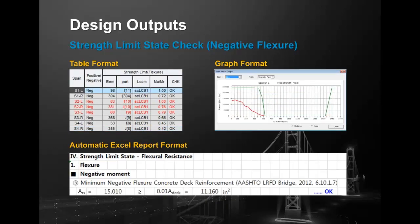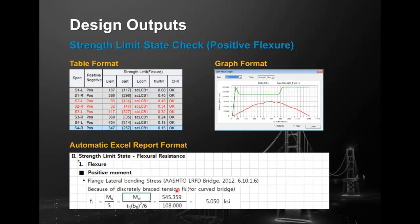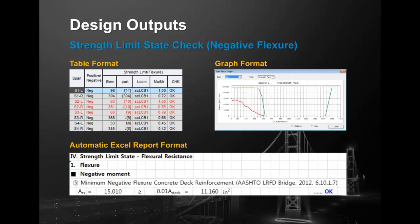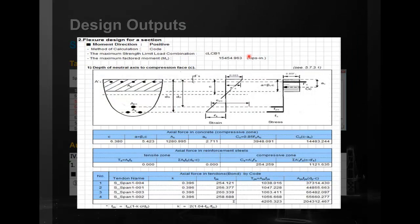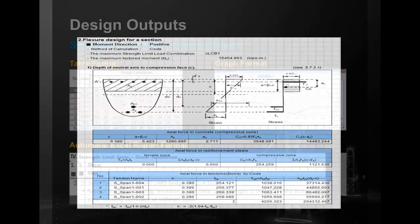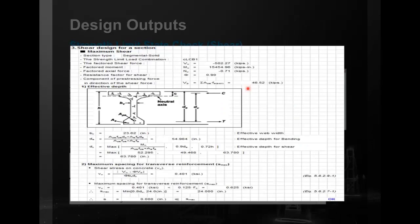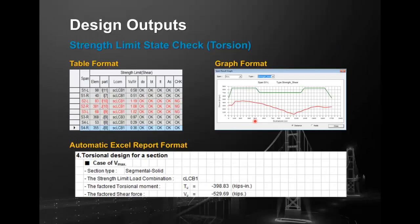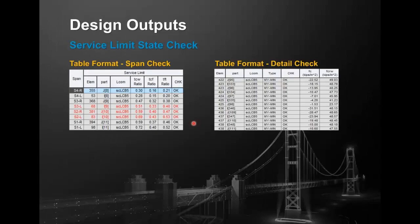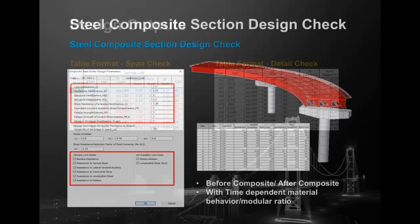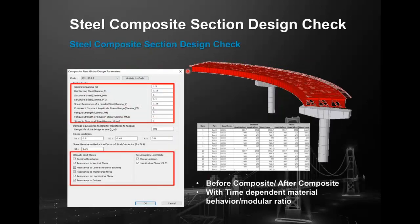The Excel report covers positive flexure resistance, negative flexure checks, shear design, torsion, and service limit state checks. For steel composite section design as per AASHTO and Eurocodes, you select the code and parameters, and the program generates a detailed design report with all checks performed. Relevant code clause numbers are also provided in the Excel sheet so you can cross-check with the code.